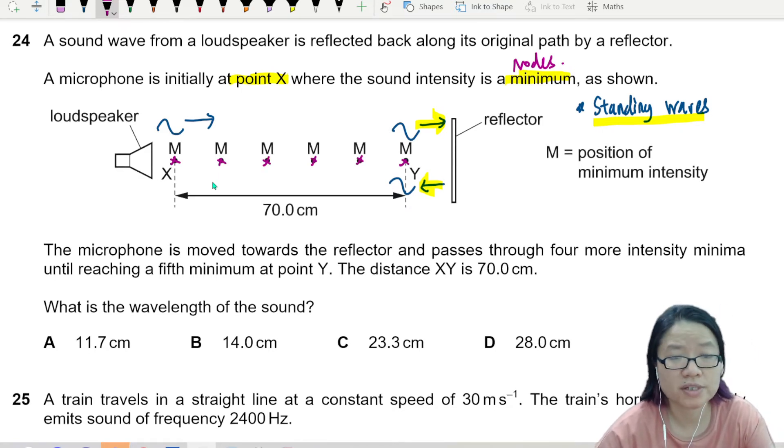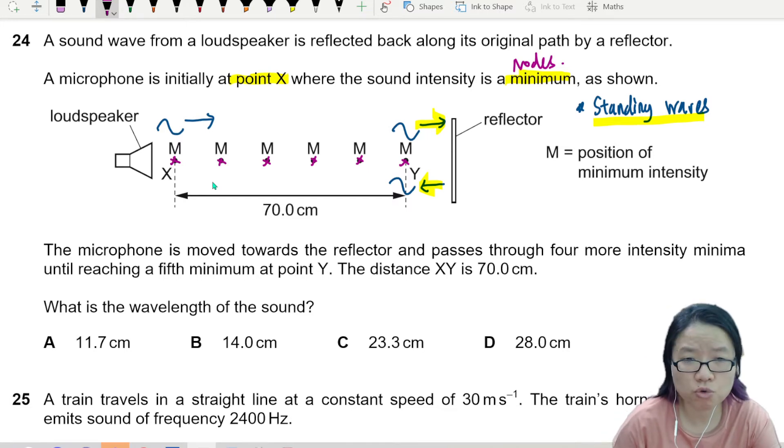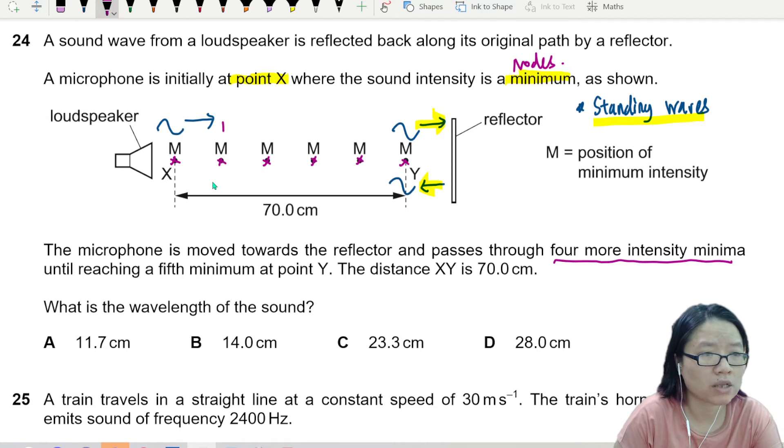The microphone is moved towards the reflector and passes through four more intensity minimum. So one, two, through four, until reaching the fifth at point Y. This is number five. The distance XY is 70 cm.